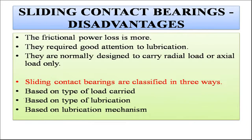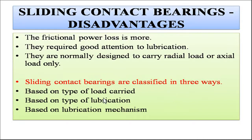There are also disadvantages. Since there is sliding contact between the journal and the bearing through the lubricating oil, frictional losses are more — unlike ball bearings (called anti-friction bearings due to point contact). They require good attention to lubrication and are normally designed to carry radial load or axial load only separately, while ball or roller bearings can carry both simultaneously. Classification of sliding contact bearings can be made based on the type of load carried, type of lubrication, and lubrication mechanism.